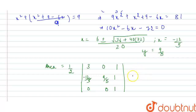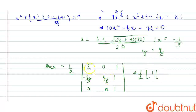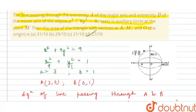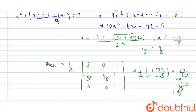Expanding the determinant along the third row, the area = ½ × (1 × (9/5 × 3)) = ½ × 27/5 = 27/10 square units. So the area of the triangle is 27/10 square units. Checking the options, option D is the correct option. I hope this is clear, thank you.